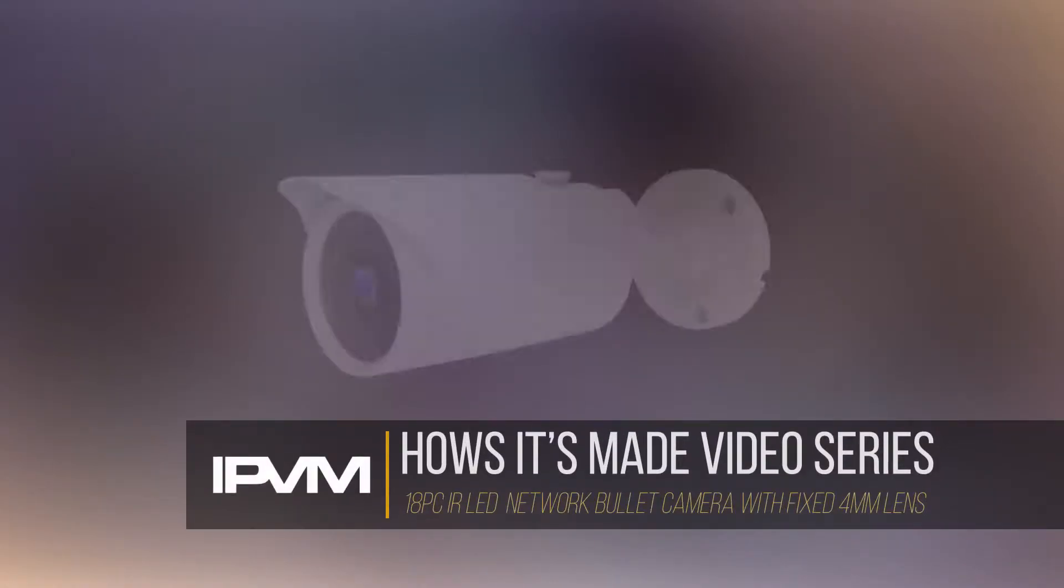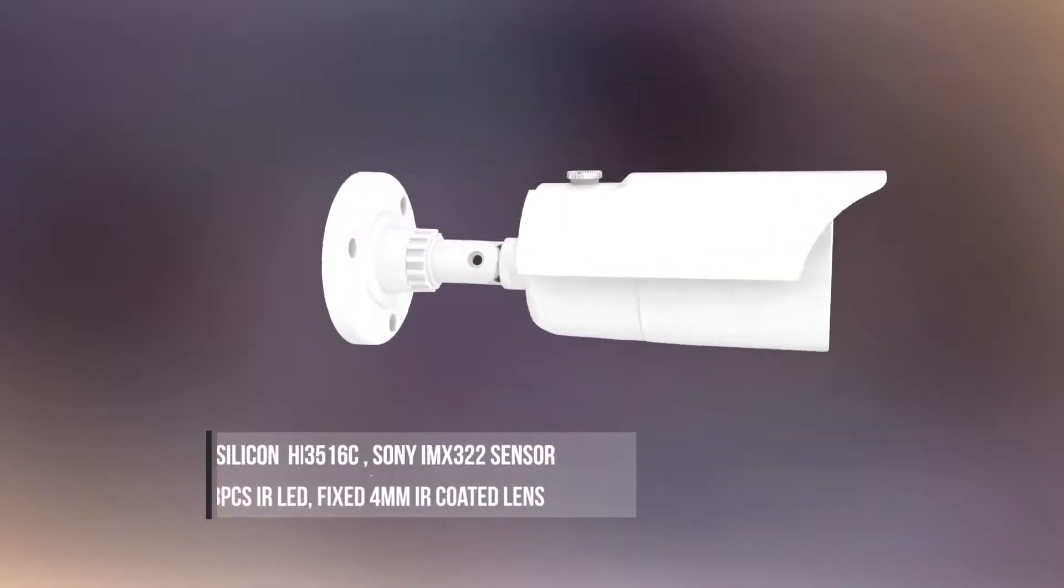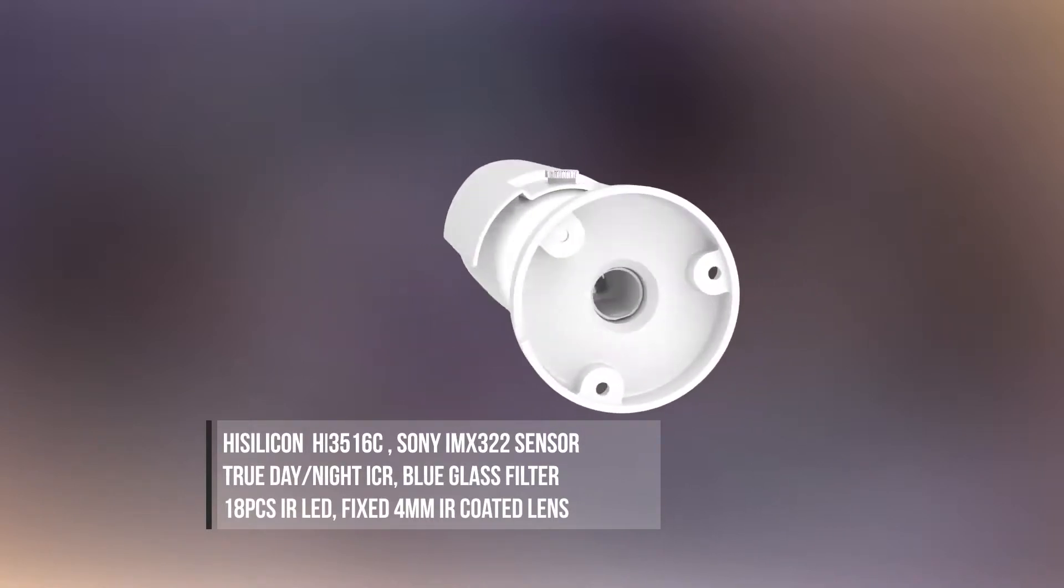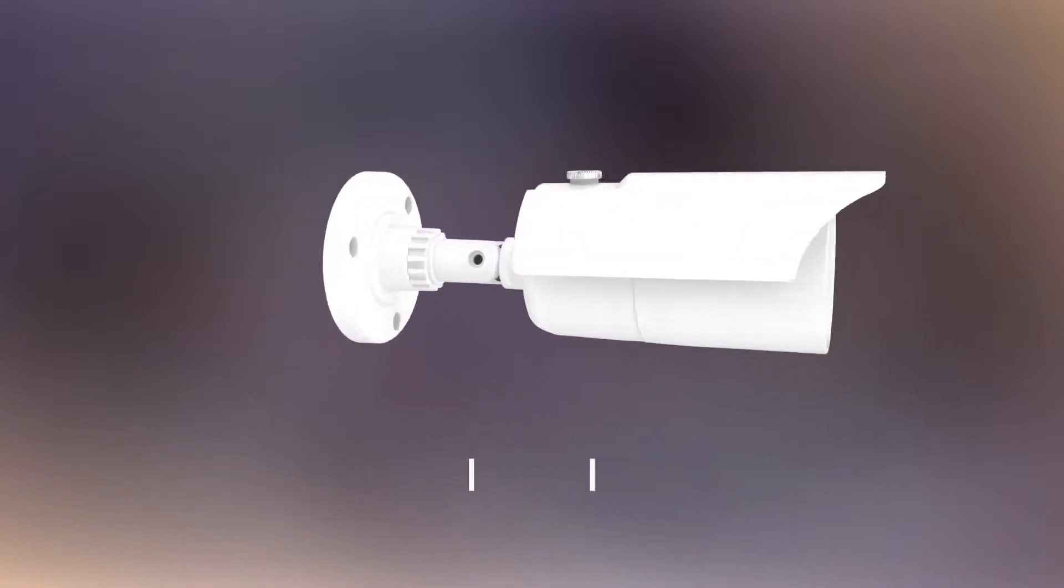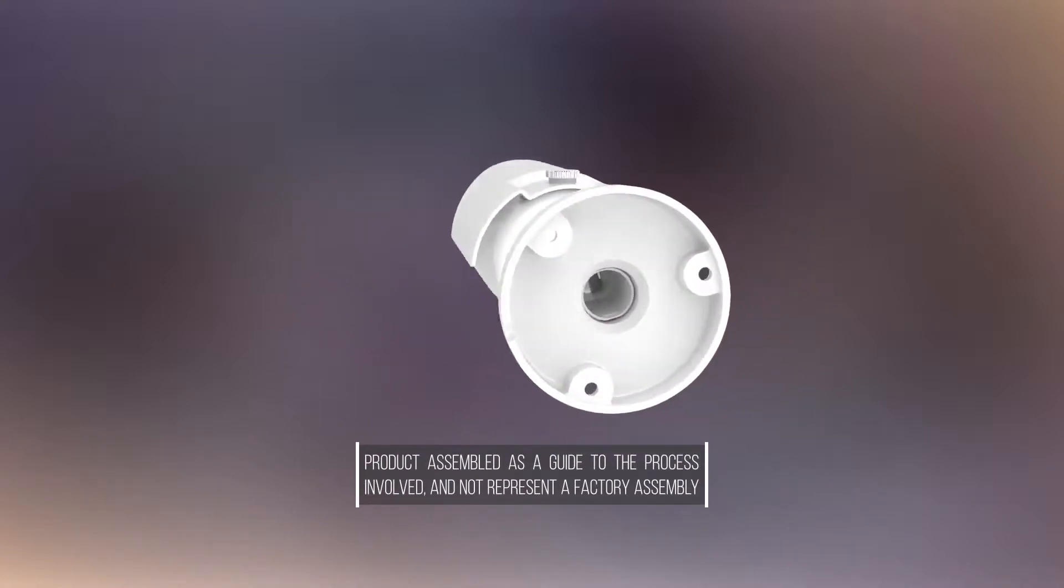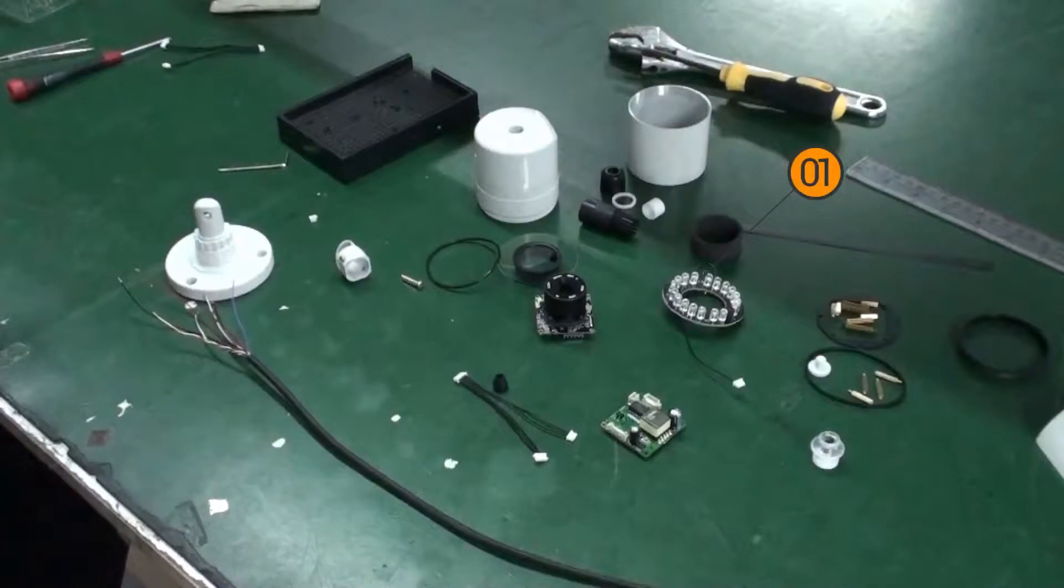Here we have an 18-piece network bullet camera based on the HiSilicon 3516C solution with a Sony sensor and a 4mm fixed lens in a standard bullet-style housing with a free-access bracket. Now we move on to the assembly parts and introduce them in no particular order.